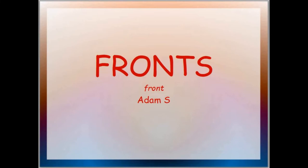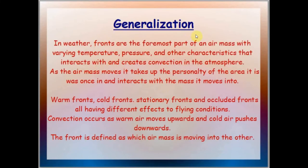We have the generalization just to get started: weather fronts are the foremost part of an air mass with varying temperature, pressure, and other characteristics that interacts and creates convection in the atmosphere. Convection is vertical movement — it's action in the atmosphere. As the air mass moves, it takes up the personality of the area it was once in and interacts with the mass it moves into. Warm fronts, cold fronts, stationary fronts, and occluded fronts all have different effects on flying conditions. Convection occurs as warm air moves upwards and cold air pushes downwards, and the front is defined as which air mass is moving into the other.